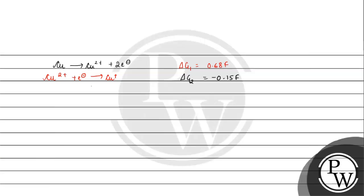If we add both equations, Cu²⁺ and one electron will cancel out. What remains is from copper we get copper plus and electron.